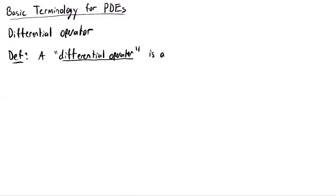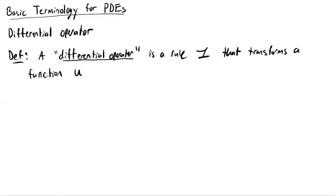We'll call this rule script L, which transforms a given function into another function. So it transforms a function U — say U equals sine of x plus y — into another function L of U. You want to think of this differential operator intuitively as like a function, but not a function on numbers or vectors. Instead, it's a function whose input is other functions.